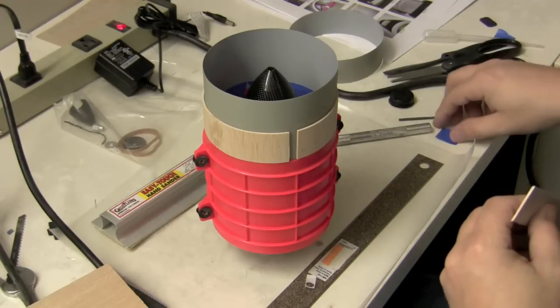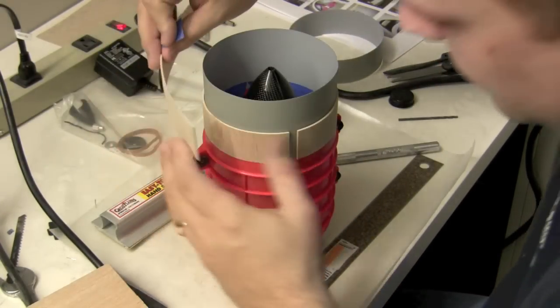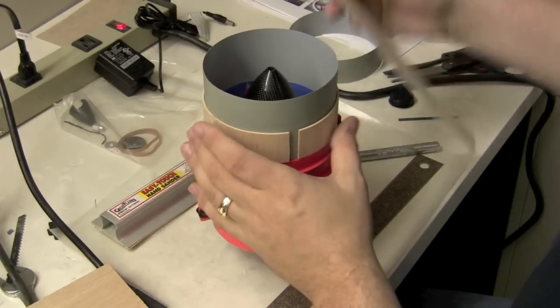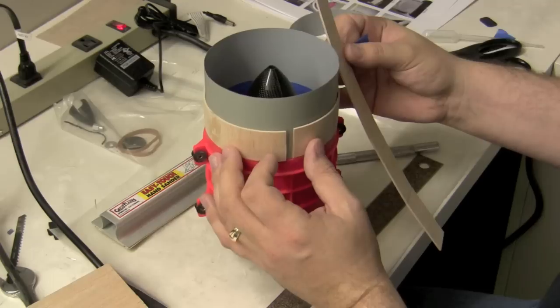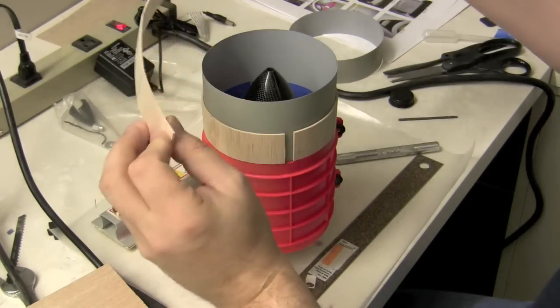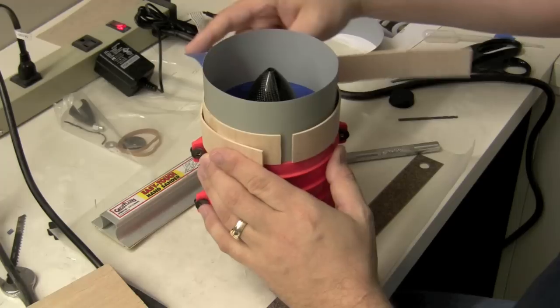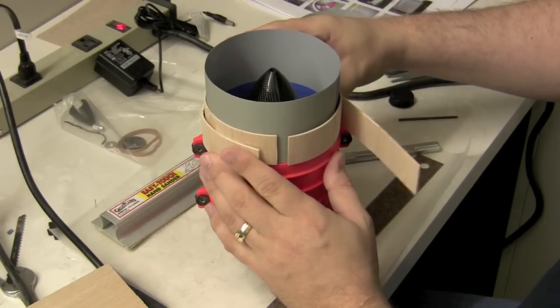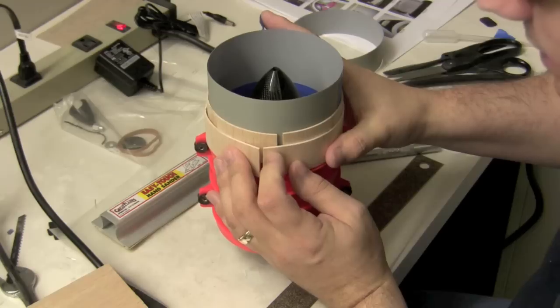The next thing we're going to do is wrap this around. Now, I put the ring back on here because we want that to be part of our sizing here so that everything fits the way it needs to. Basically, I'm just going to wrap it around just like that.